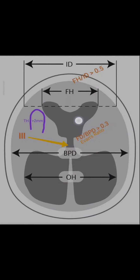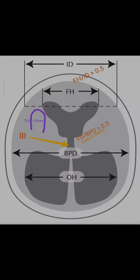Mickey Mouse sign. FH-ID ratio more than 0.5, where ID means internal diameter from inner table to inner table at the same level where the frontal horn is measured. Evans ratio more than 0.3, i.e., the FH-BPD ratio — frontal horn to biparietal diameter ratio.